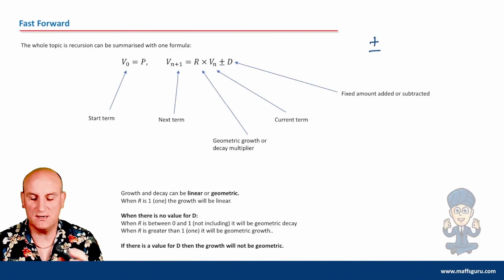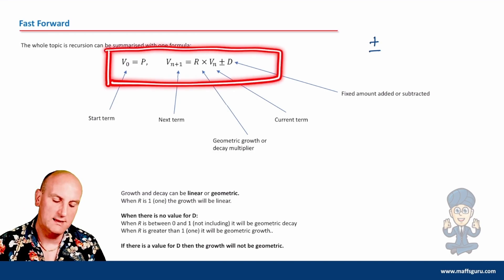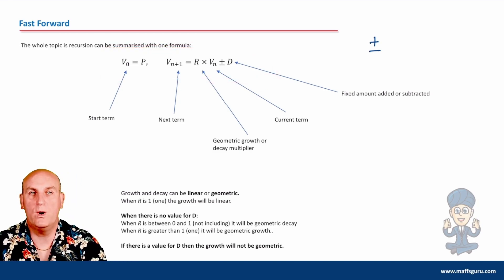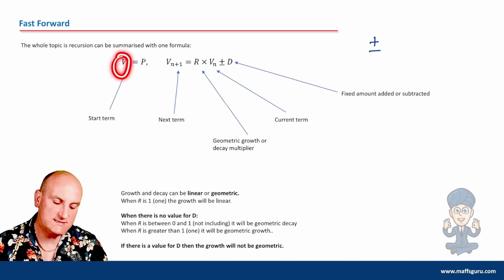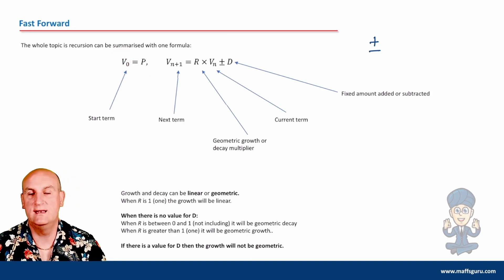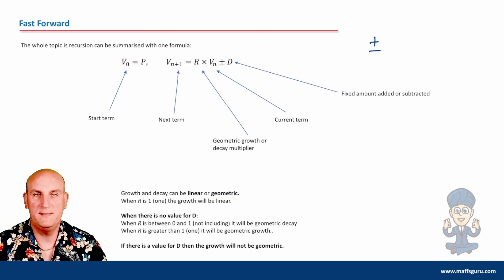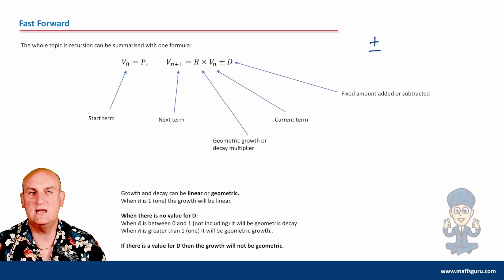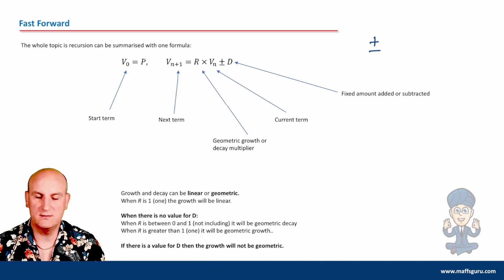Now I'm going to fast forward and tell you that pretty much everything I'm about to do has everything to do with this one formula. So V₀ equals P — V₀ stands for our start term. When we look at the notation, anything with a subscript zero means our first term. P can be any letter, but generally it's our start amount, our principal, our opening number.